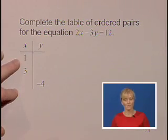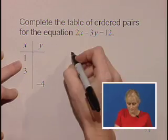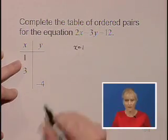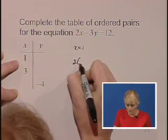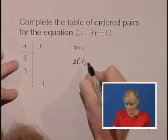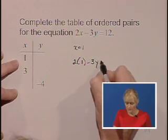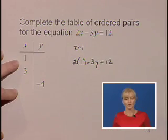So let's start when x is 1, which means everywhere in our original equation we're going to replace x with the value 1. So we'll have 2 times 1 minus 3y equals 12.